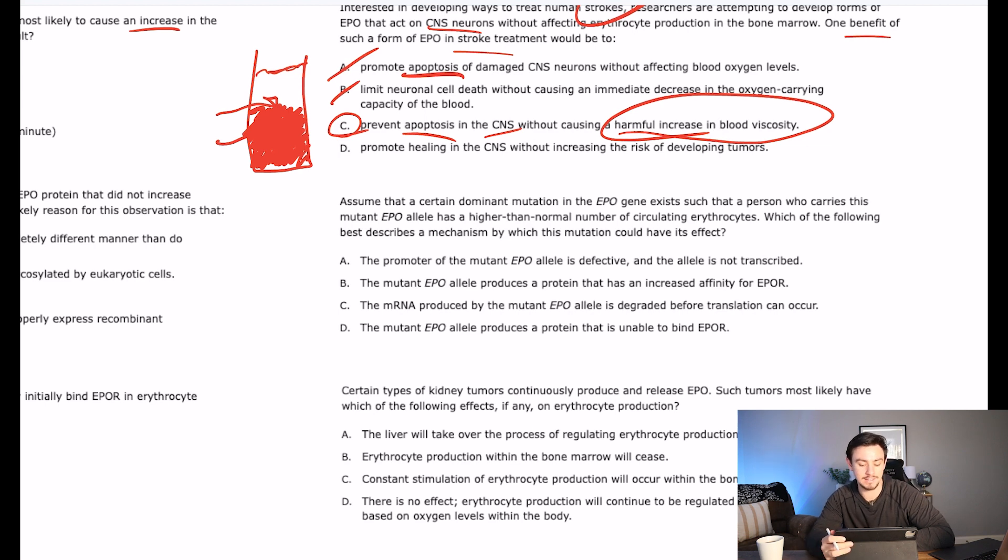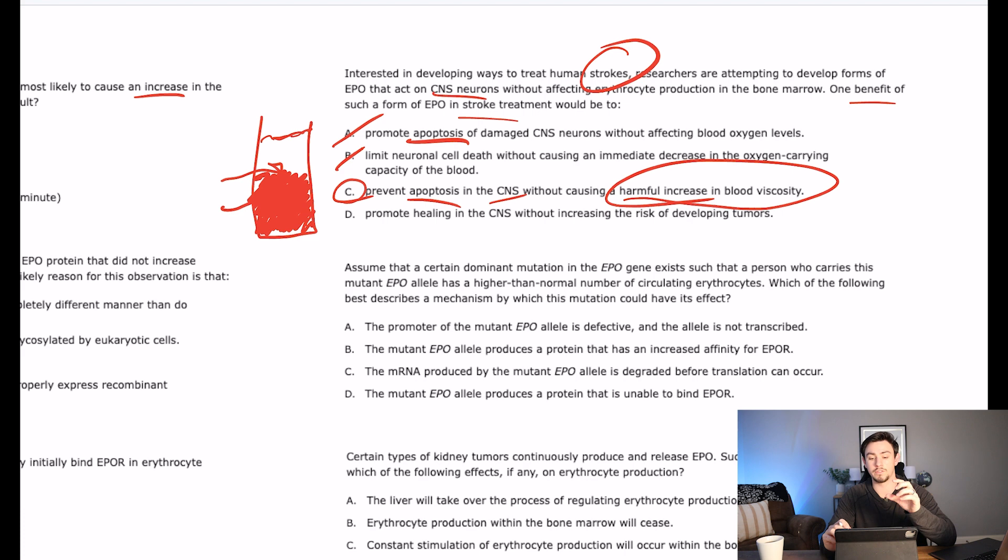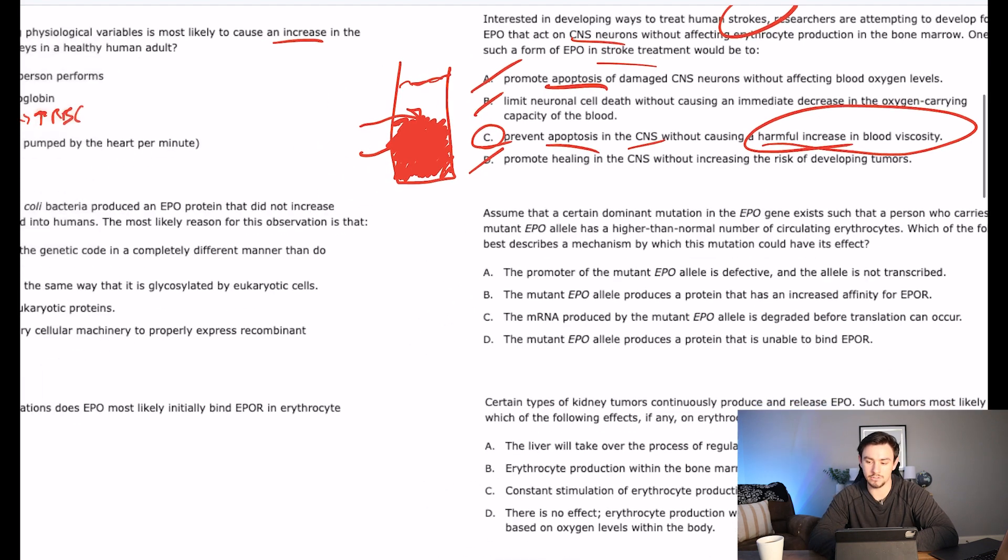D says promote healing in the CNS without increasing the risk of developing tumors. No, remember we talked about how this process is something that tumors take advantage of. And so if you do it more naturally, well then tumors are going to eventually possibly learn how to do it. So you don't want to introduce that agent. So maybe not D. Correct answer here is C.